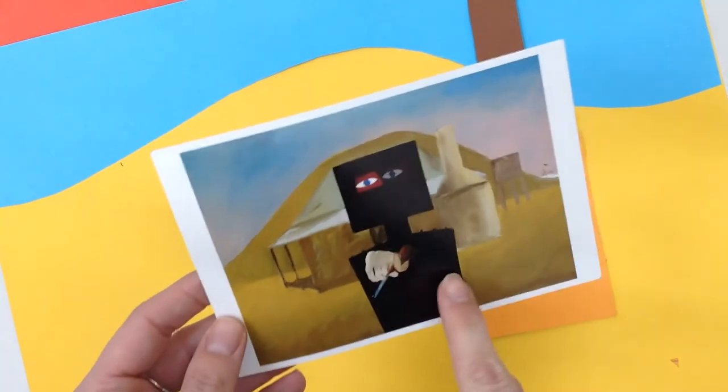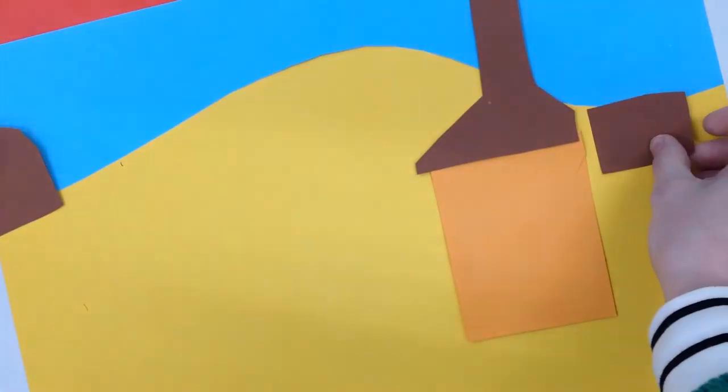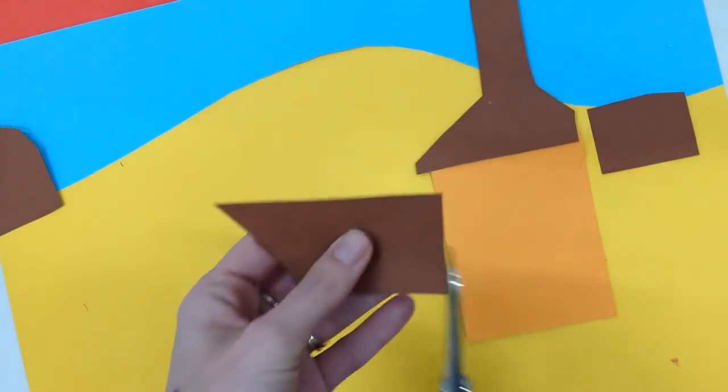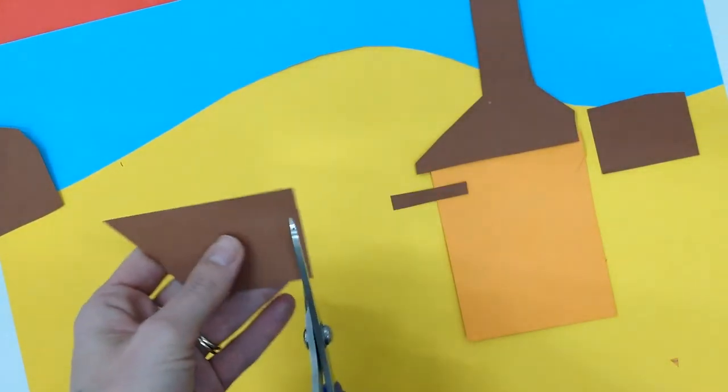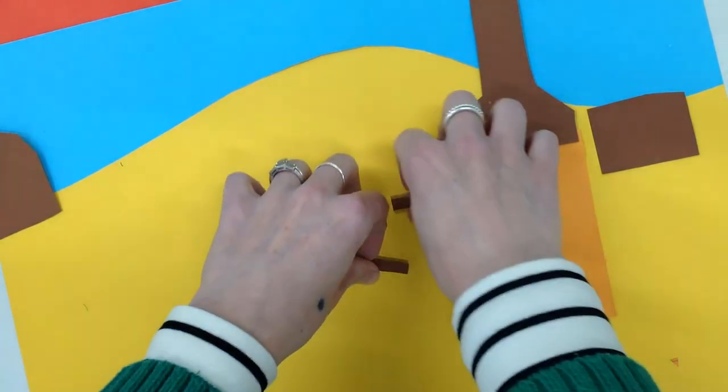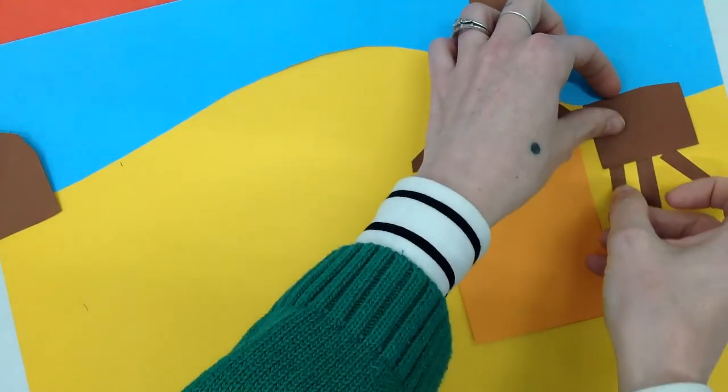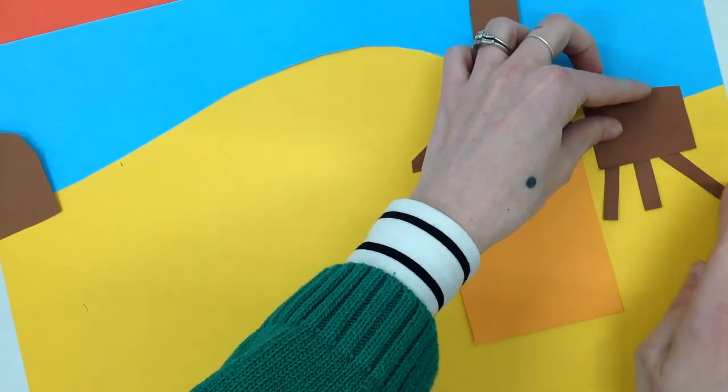Now I've created this chimney here, I'll go ahead and create a small little water tank over here. I'm going to use that same brown, so I'll cut out a square, rectangle actually. I'm going to put that there, and I want to create some legs. I've got this little scrap here. If I just go one, two, three.